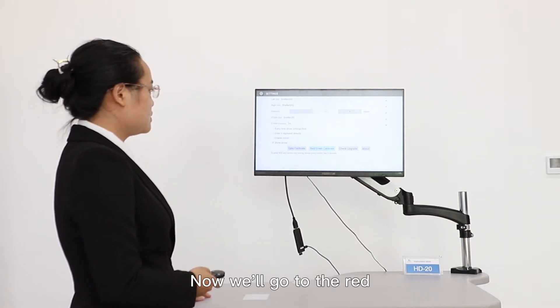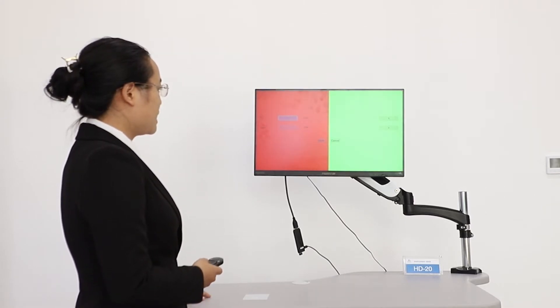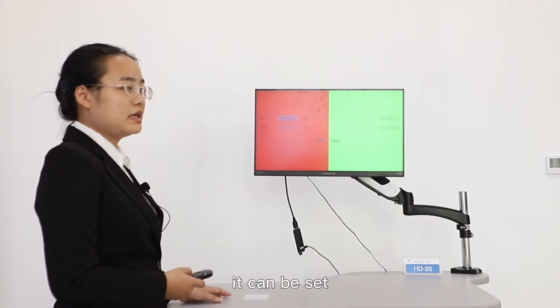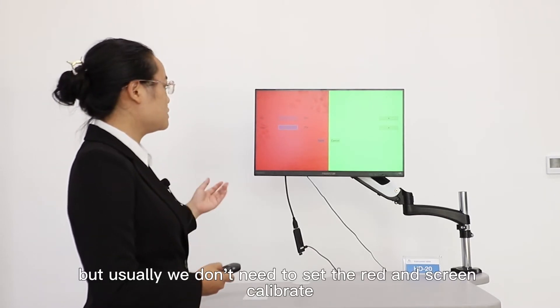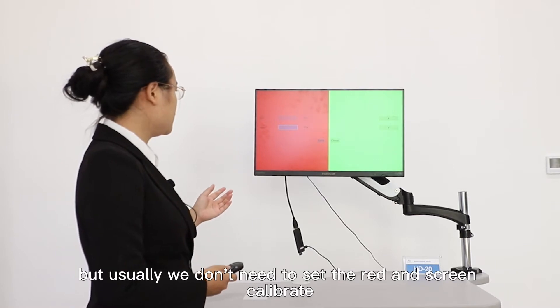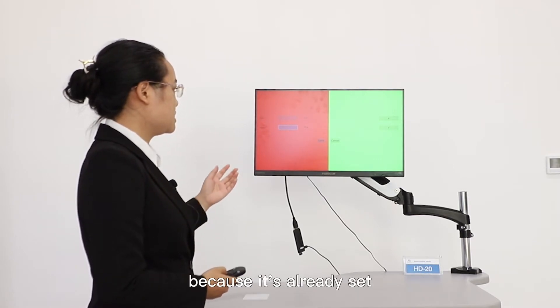Now we will go to the red-green calibrate. As you can see, it can be set. But usually, we don't need to set the red and green calibrate because it's already set.